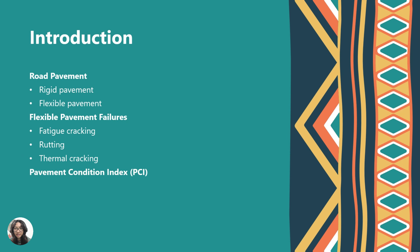My name is Christina, matrix number AF210122, and I'll be introducing a little info of our project. There are two types of road pavement: rigid pavement, which is made out of Portland cement concrete and has load distributed by slab action, where the pavement behaves like an elastic plate resting on a viscous medium.